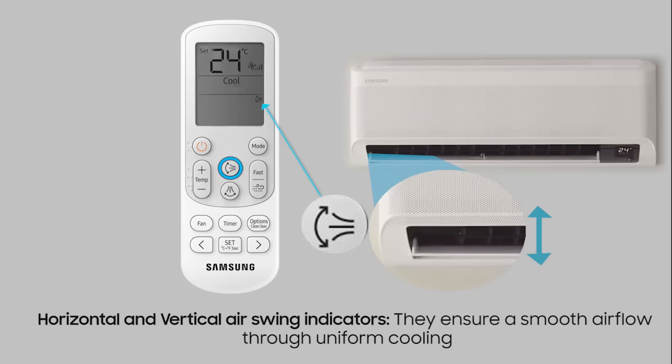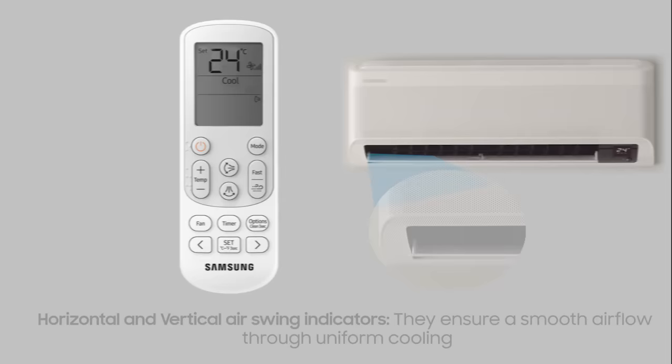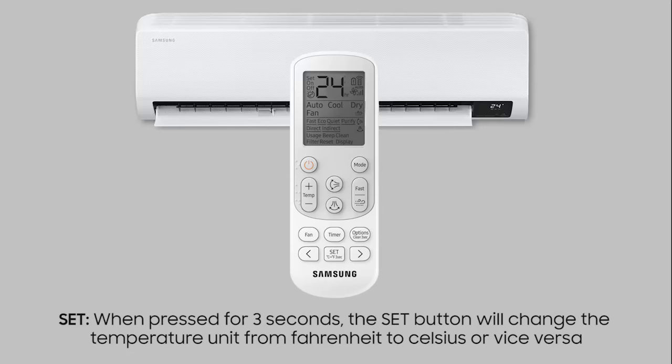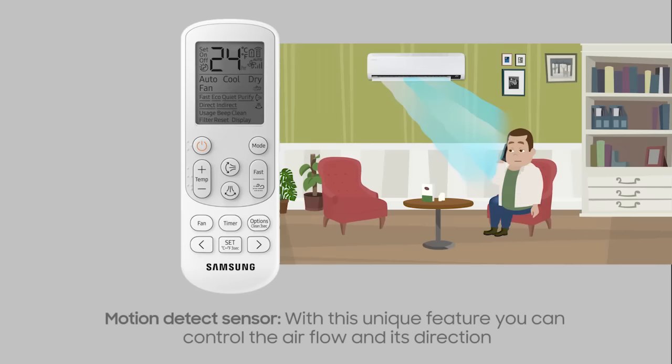Horizontal and vertical air swing indicators ensure a smooth air flow through uniform cooling. When pressed for 3 seconds, the set button will change the temperature unit from Fahrenheit to Celsius or vice versa.